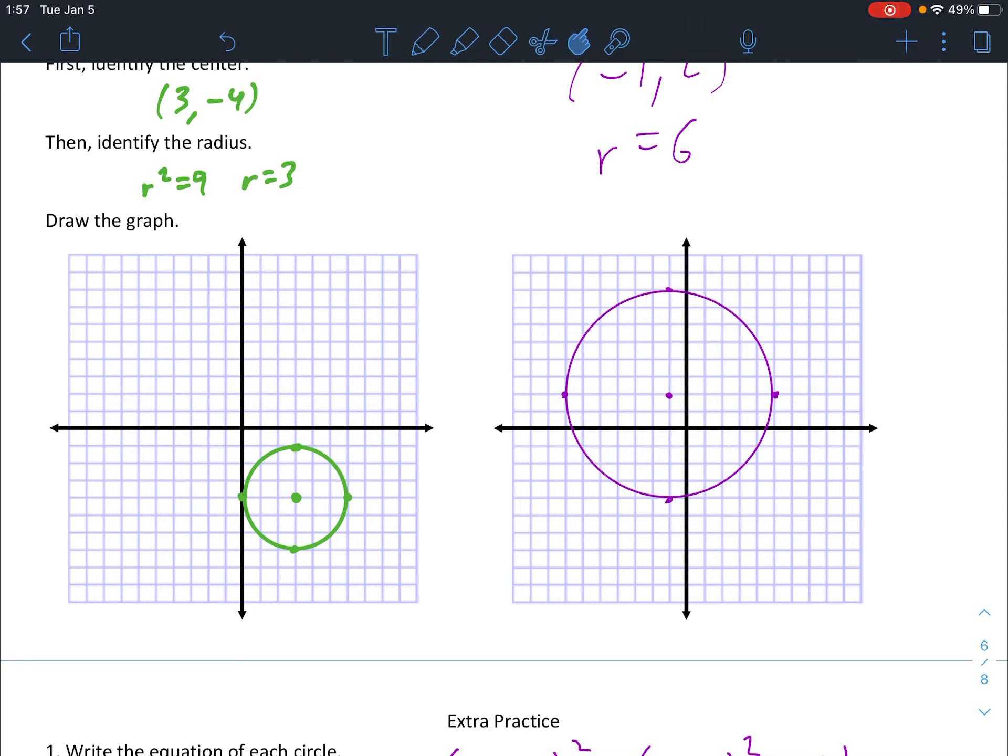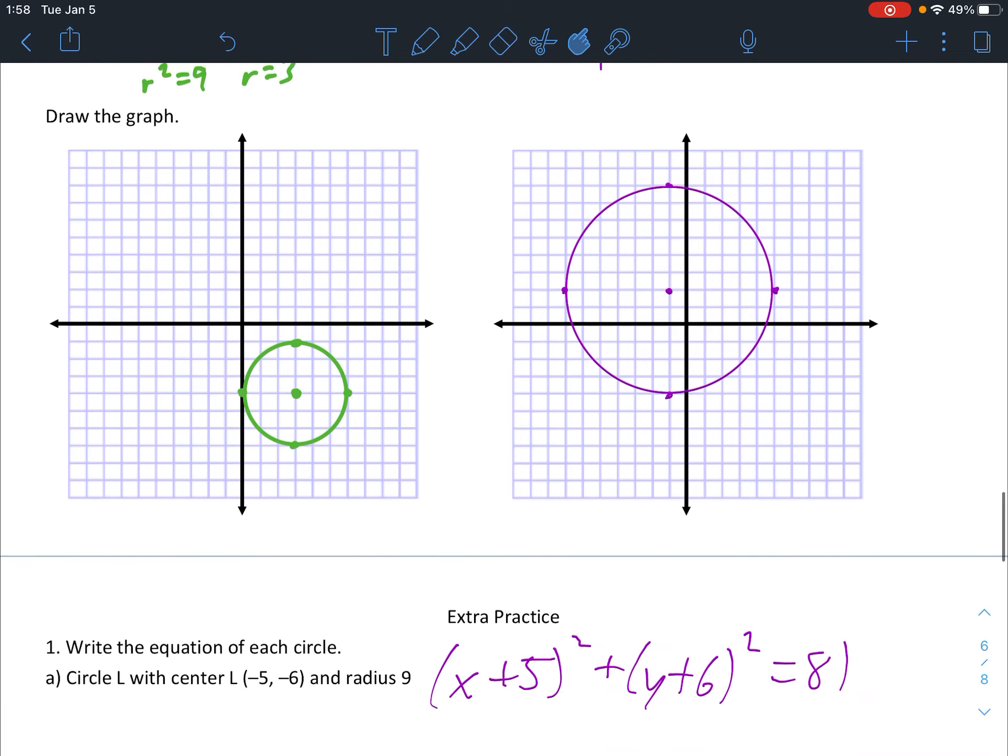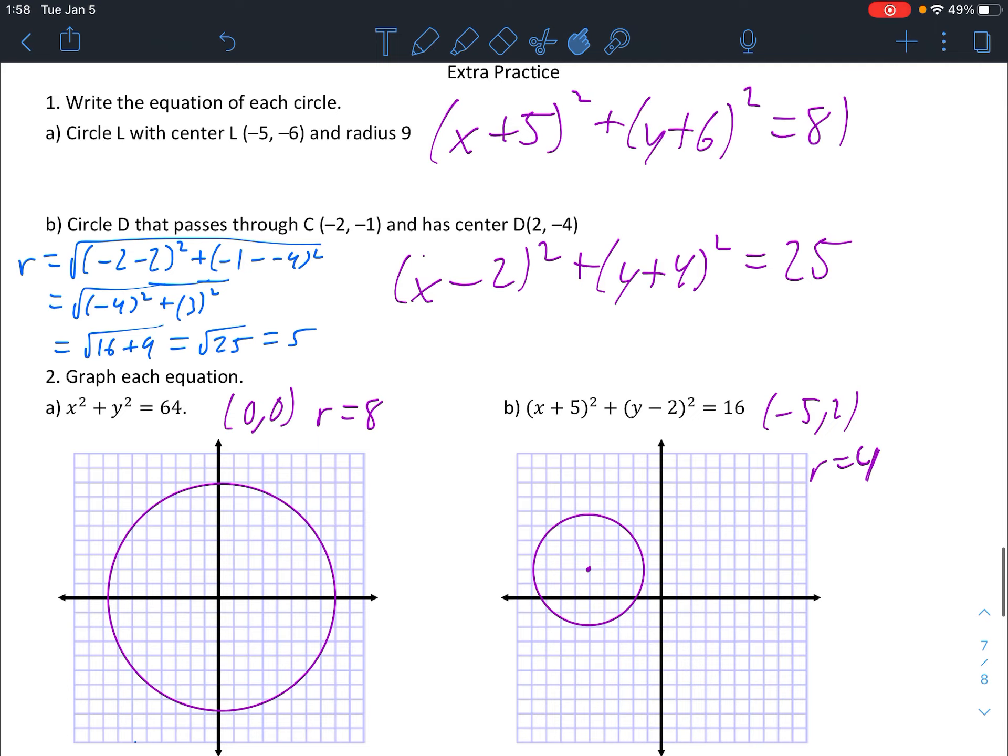So the last slide is just 4 extra practice problems. One of each of the problems we did today. Please stop here, work on those 4 problems, and once you have finished all 4, you can come back and check your answers on the video. Here are your answers to the final 4 problems. And that will do it for section 6.3 and for chapter 6 in general. If you have any questions, as always, you can let me know. Thank you.